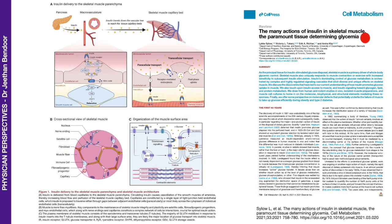So insulin has several actions in the skeletal muscle, which is the paramount tissue determining glycemia. First of all, it has to get itself into the skeletal muscle — increasing blood flow into the skeletal muscle and increasing the absorption or passing through of insulin via the endothelium into the muscle. And once it gets into the muscle, it has to bind the receptor, activate the GLUT4 receptor, and promote glycogenesis.